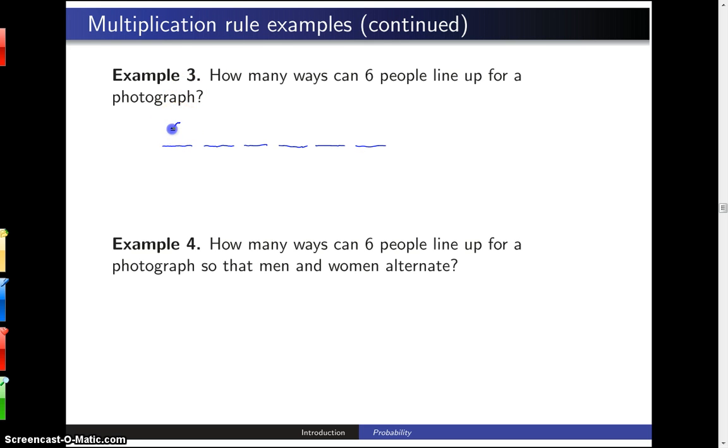Now, there are six different people to choose from to place at the far left, and then five people to choose next to the person at the far left, and then four, three, two, and one, and the multiplication rule says that these should all be multiplied.